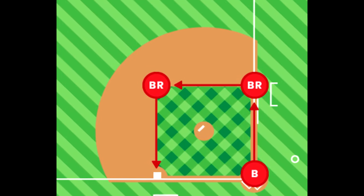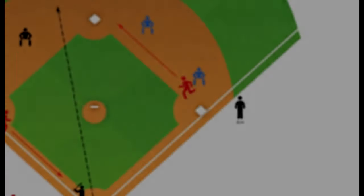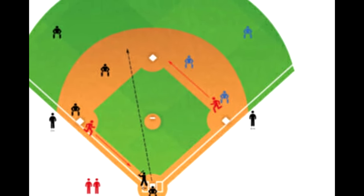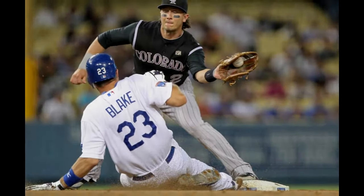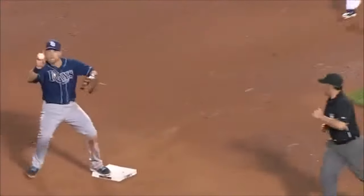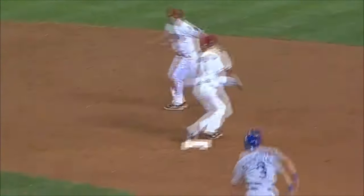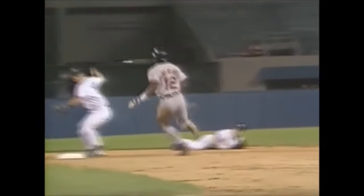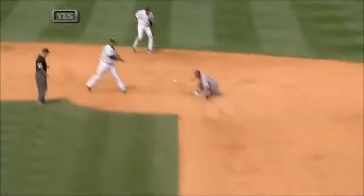When a runner is on base, the rules start getting more complicated. A runner is forced to run on a ball put in play if there is no room behind the runner to add the batter, since only one player can be on a base at a time. So if a runner is on first base and the batter puts the ball in play, the runner on first base is forced to go to second base. As the defense, this situation will often lead to two outs in a single play, known as a double play. Typically, a ground ball will be fielded by a player, then thrown to second base where another defender will catch it with their foot on second base, then throw the ball to first base before the batter reaches it. This is known as grounding into a double play, and is quite common at the professional level.